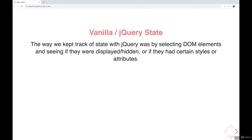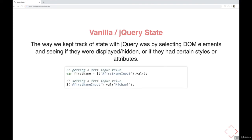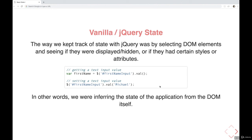In the past with things like jQuery or vanilla JavaScript, the way a lot of people would approach managing state and keeping track of things was basically to use the DOM — use the elements on the page as your source of truth. For example, let's say there's a form with a single input called first name input. If we wanted to know the state of the application, we select that input and call .val to get the current value. We're inferring the state of the application from whatever is currently being displayed in the DOM.